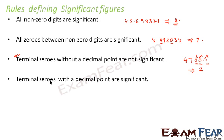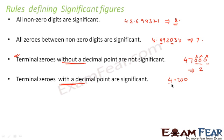Terminal zeros with a decimal point are significant. Without a decimal point they are not significant, but with a decimal point they are. For example, 4.7000 — if you ask how many significant digits there are, you have 4, because even though the zeros are terminal zeros, you have a decimal point. Therefore in this case you have 4 significant figures.